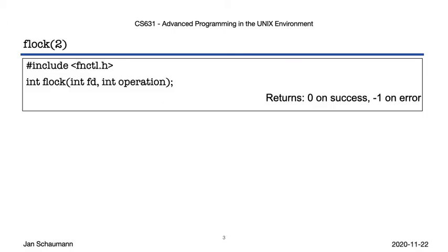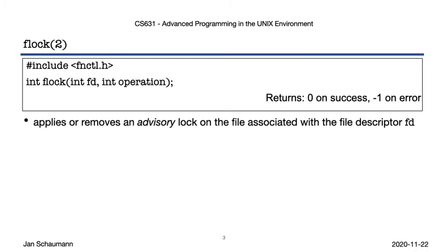The flock system call applies or removes an advisory lock on the file associated with the file descriptor FD. These advisory locks allow cooperating processes to perform consistent operations on files, but they do not prevent a process from accessing the file without using these locks. The locking guarantees, similar to semaphores, rely on the processes in question to cooperate and agree to perform these checks.